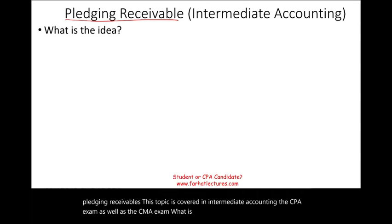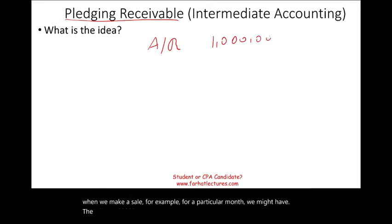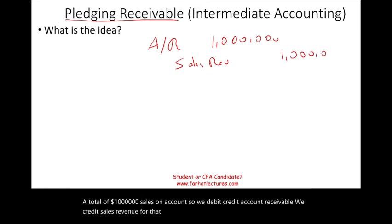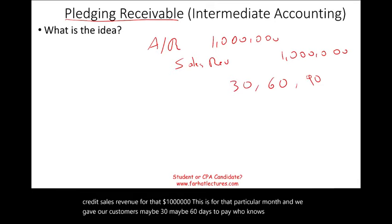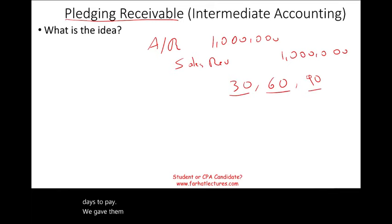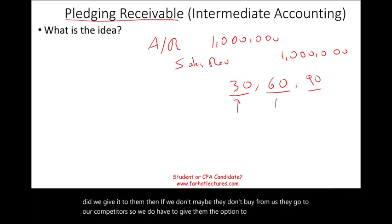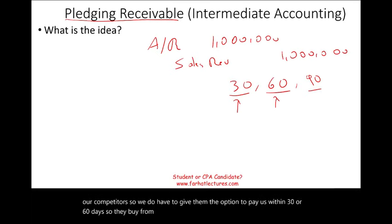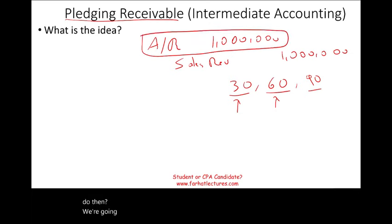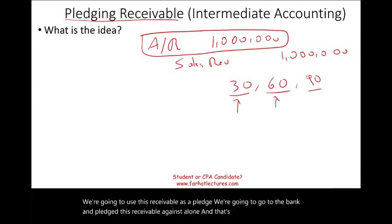What is pledging receivable? When we make a sale, for a particular month, we might have a total of a million dollar sales on account. So we debit accounts receivable, we credit sales revenue for that million dollar. However, we gave our customers maybe 30, 60, or 90 days to pay. We gave them that credit option, but we cannot wait for the money. If we don't give it to them, maybe they don't buy from us — they go to our competitors. So we do have to give them the option to pay within 30 or 60 days. They buy from us, but we need the money now. So what we will do is use this receivable as a pledge — we go to the bank and pledge this receivable against a loan. That's the idea behind this concept.